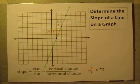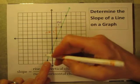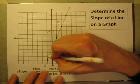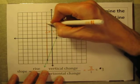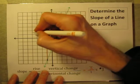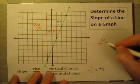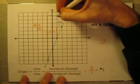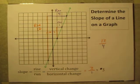What if I had chosen two different points? Would that still give the same slope? Let's try with the two farthest points apart. Starting on the left and going to the point on the right, I count up twelve units for the rise. Then going to the right I count four units for the run. So I get twelve over four.